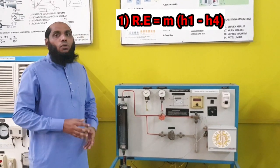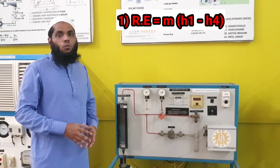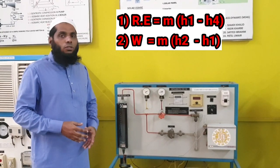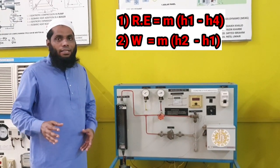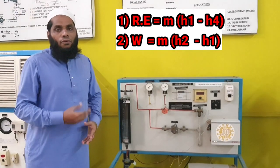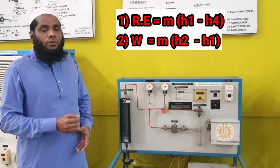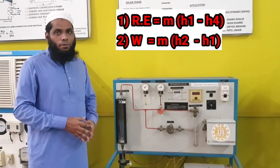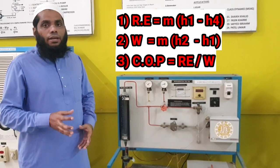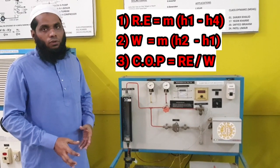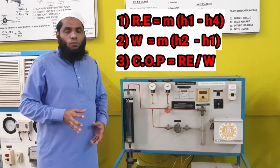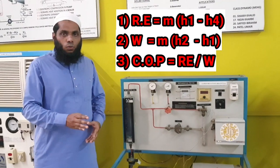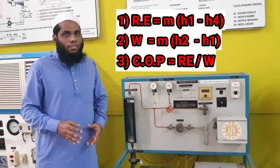Then for the compressor, we determine the work done by the compressor, which equals the mass of vapor refrigerant multiplied by the difference in enthalpy at exit and inlet — that is M into H2 minus H1. After calculating these refrigerating effect and compressor work values, we determine the COP. COP equals refrigerating effect divided by compressor work, which after substituting gives: COP = (H1 minus H4) divided by (H2 minus H1).